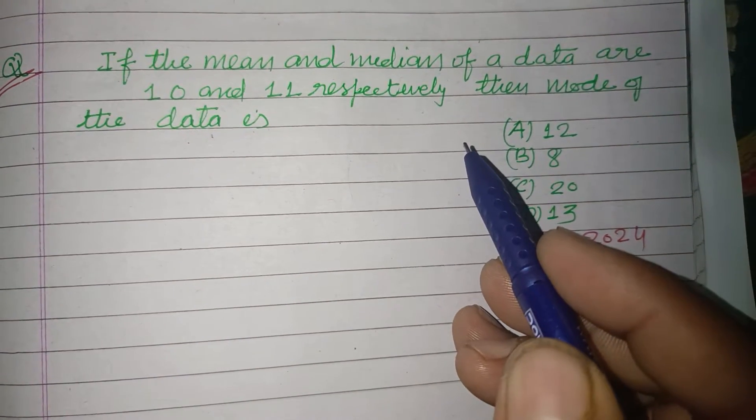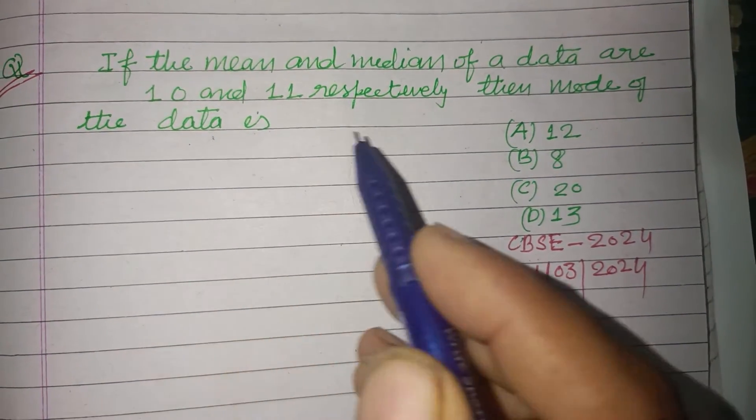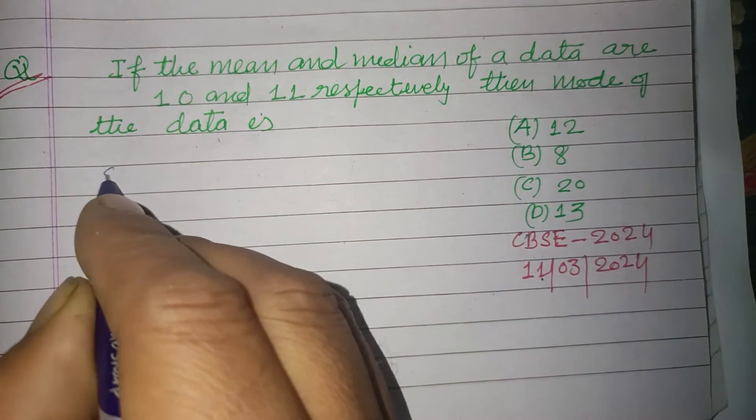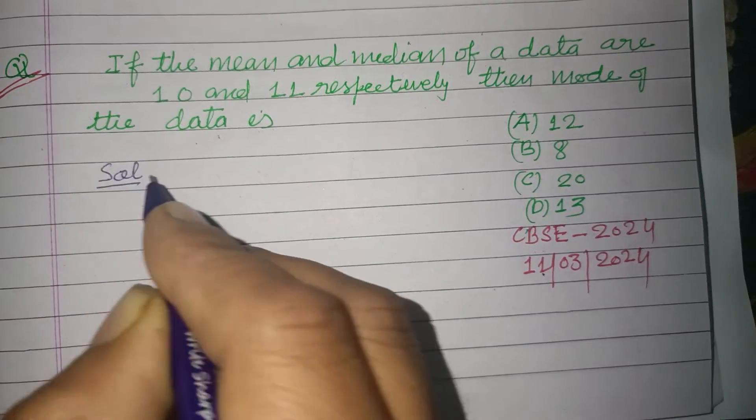If the mean and median of a data are 10 and 11 respectively, then what is the mode of the data? This question is based on a formula.